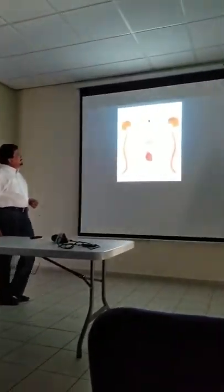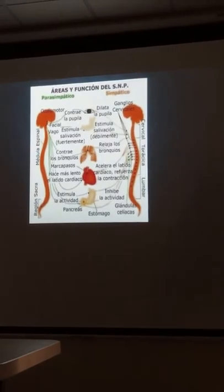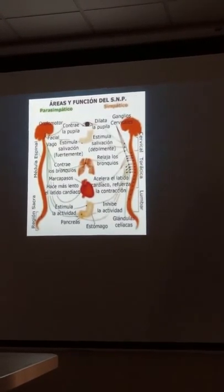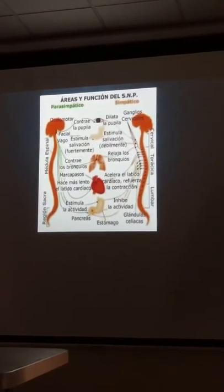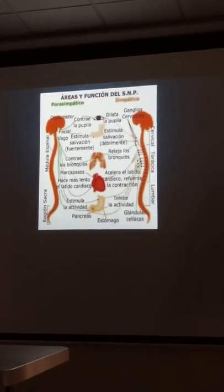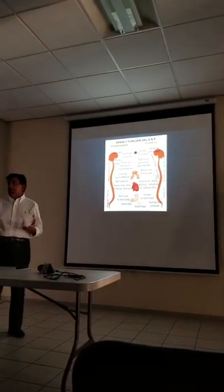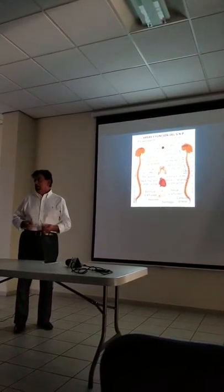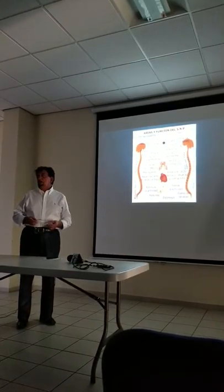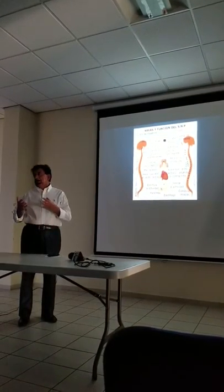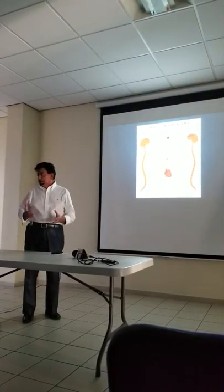This is one of the classical pictures that we have. You can see the antagonism of these systems. But really, for practical reasons, we cannot imagine that they are antagonists 100%, absolutely. Because sometimes you have the possibility to see the sympathetic system working together at the same time with the parasympathetic system.